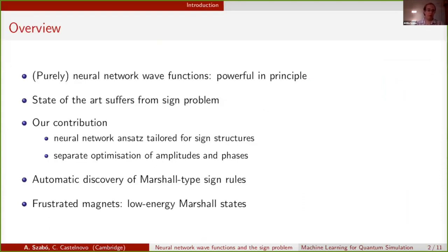To give an overview of the talk, neural network wave functions are in principle a very powerful approach to many-body quantum physics, but as it turns out many of the state-of-the-art approaches suffer from the sign problem. To tackle this problem, we have designed a neural network ansatz and a corresponding optimization protocol that is tailored for learning these sign structures specifically.